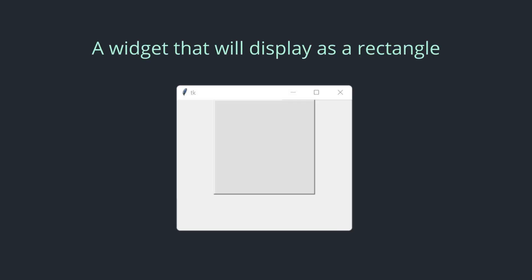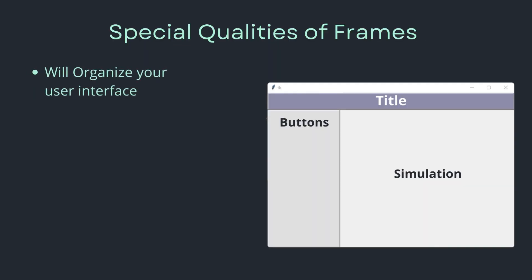When talking about geometry management, we should talk about a very special widget called a frame. A frame is basically just a widget displayed as a rectangle on your GUI application. From the example on your screen, I created a GUI with a frame right in the center — just a square. You can put whatever color you want, make it recessed, add a border width, and set any size you want. That's what a frame is.